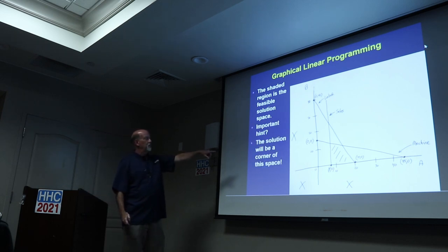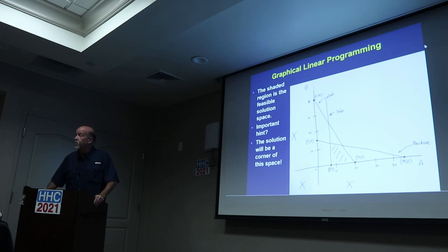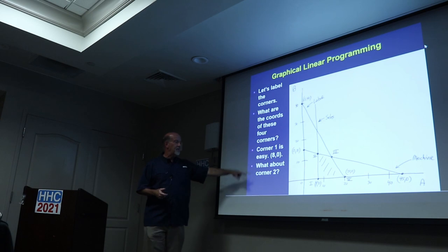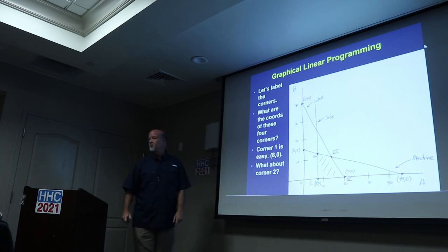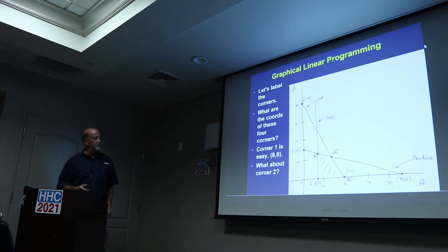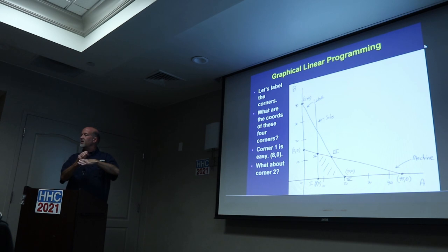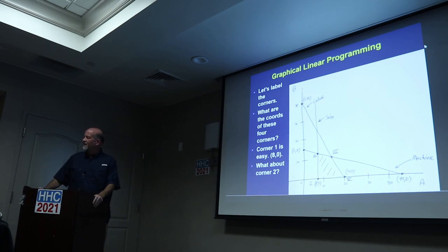Well, an important hint, the solution is always a corner of the space. With only one exception. It's always a corner of the trapezoid. So what are the corners? The easy corner, corner number one is easy. That's just 8, 0. What's corner 2? Corner 2 is an intersection of two lines, the sales constraint going vertically and that machine time constraint. Do you remember in the 7th or 8th grade where you had to find the intersection of two lines? The addition method and the substitution method.